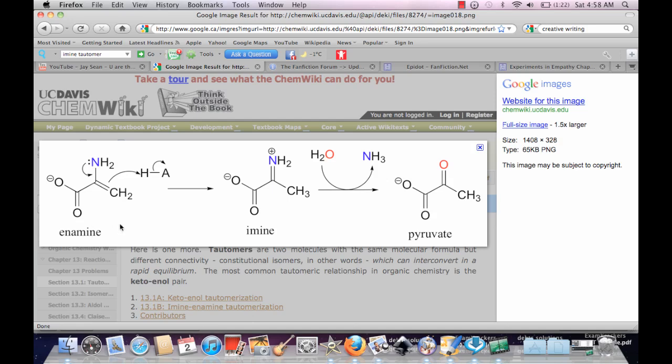The difference between the enamine and the imine is basically where the carbon is attached into the amine. It's going to have a double bond on the enamine, while it's going to have a double bond from the nitrogen to the carbon bond.